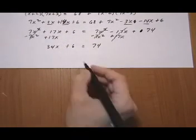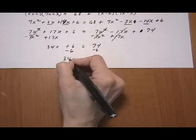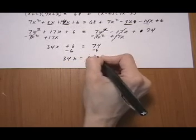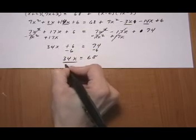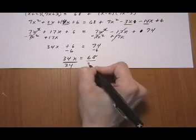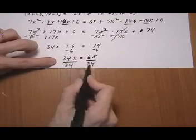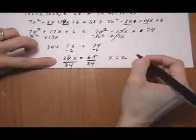And subtracting 6 from both sides, we get 34x equals 68. And I'm almost out of time. So I've got to go quick, because I've got a 10 minute limit here. 34, divide both sides. We get x equals 2.